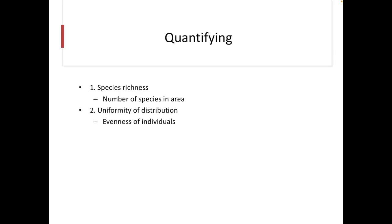But biodiversity is hard to quantify. We can go and count the number of species living in an area. We can often see if they have uniform distribution — in other words, is there an evenness of individuals scattered over an area, or are there little populations clustered here and there? And is that contributing to the diversity, or is that how it's supposed to be?